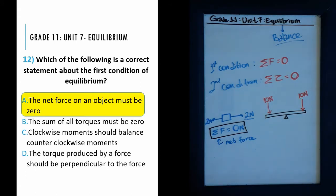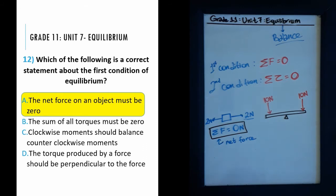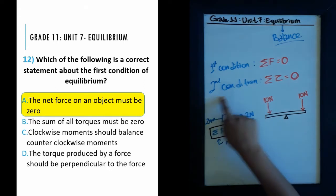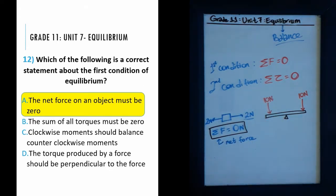If you don't know how to add forces to check the resultant, check out my video on grade 9 physics about vectors. Choice B says the sum of all torques must be zero — that is true, but it's our second condition, not the first. Reading the question too quickly, you might think there are multiple answers, but it's asking specifically about the first condition.